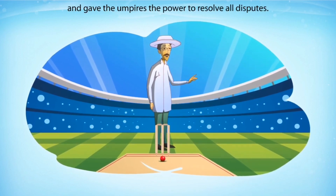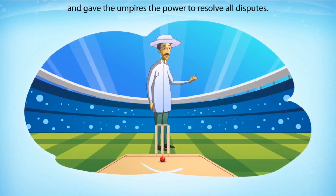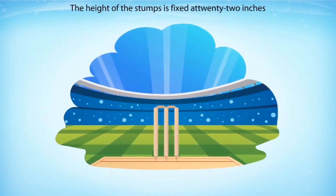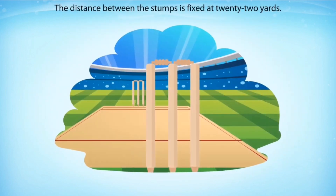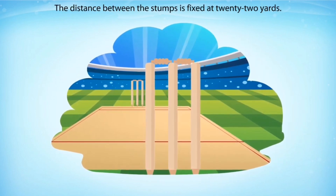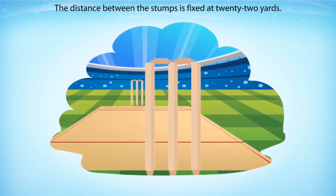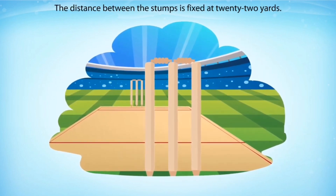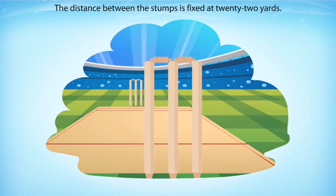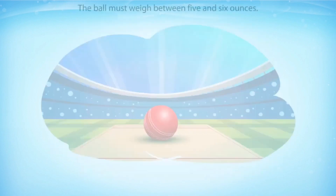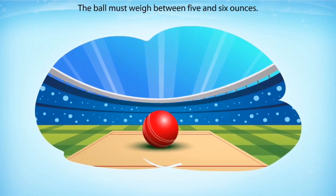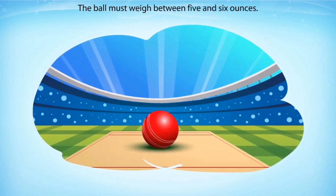Cricket grounds differ greatly in size. The laws of cricket were first drawn up in 1744. It has two umpires. The stumps are 22 inches high and the ball is 6 inches across. The world's first cricket club was organized in 1760.